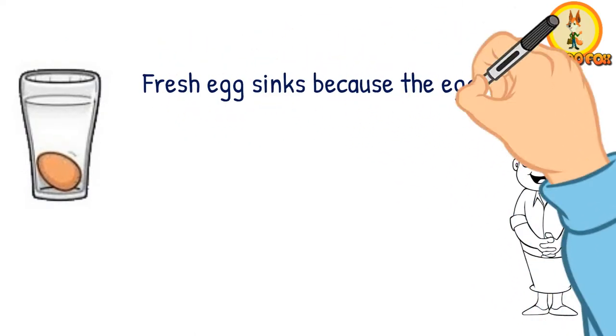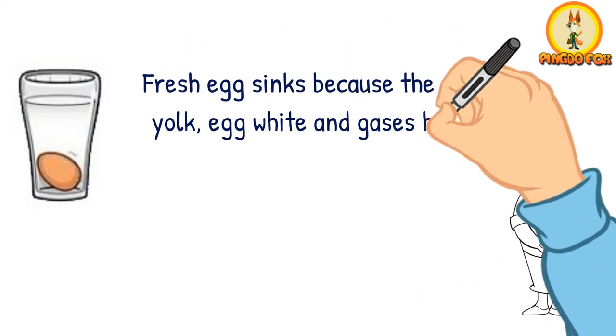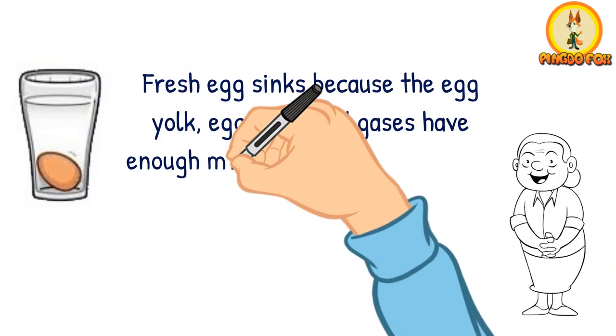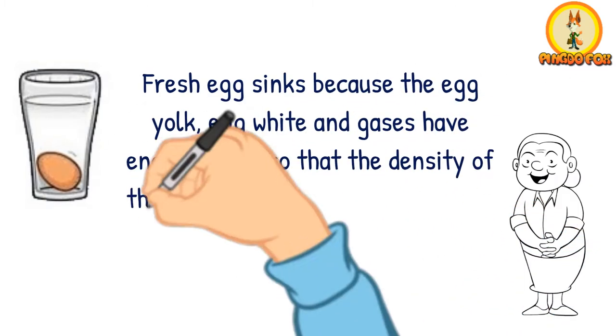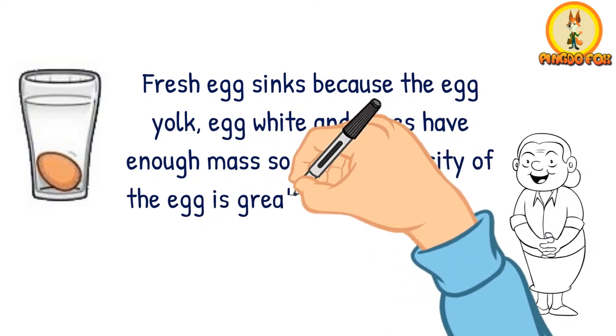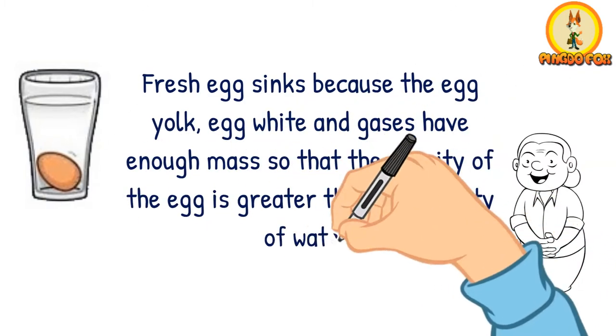A fresh egg sinks because the egg yolk, egg white, and gases have enough mass so that the density of the egg is greater than the density of water.